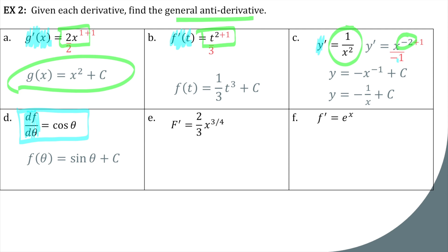So if we have a power of 3 fourths, we need to add 4 fourths. That gives us 7 fourths that we have to divide by. So 2 thirds divided by 7 fourths or multiply by 4 sevenths. We get 8 over 21, x to the 7 fourths plus c.